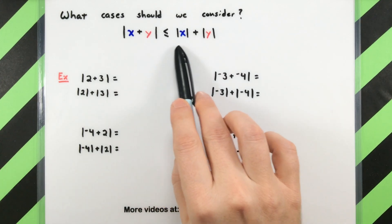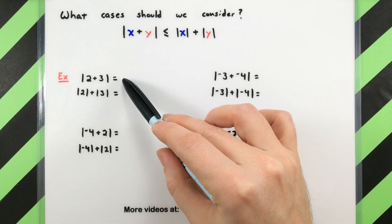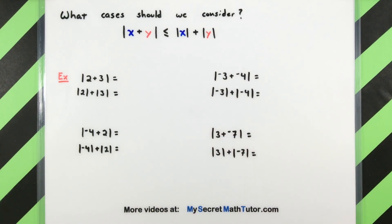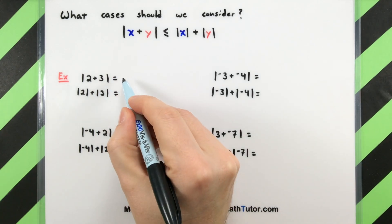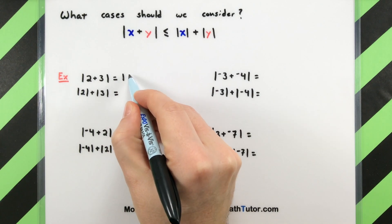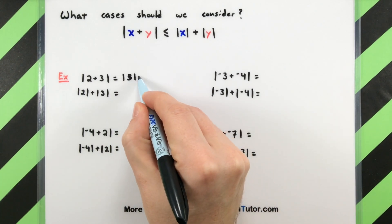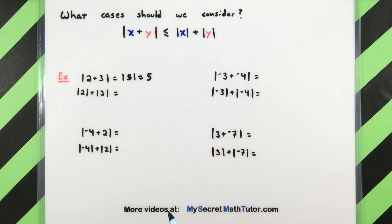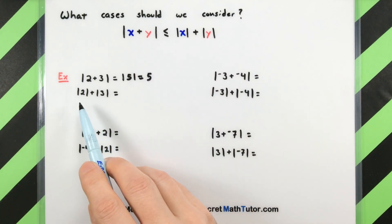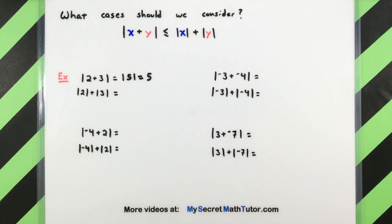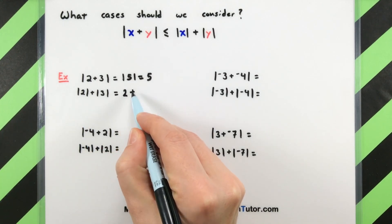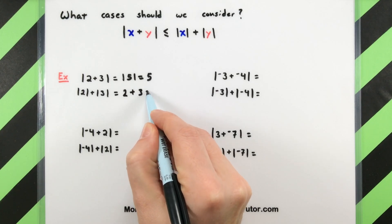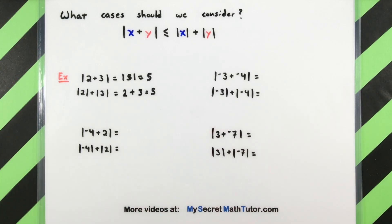Here I have the triangle inequality, and I'm looking at the left-hand side and the right-hand side using various different numbers. If I had 2 plus 3 in absolute value, 2 plus 3 is 5, so I'd be looking at the absolute value of 5, which gives us 5. On the right-hand side, taking the absolute value of each individually: absolute value of 2 is 2, absolute value of 3 is 3, so we see 5 again.